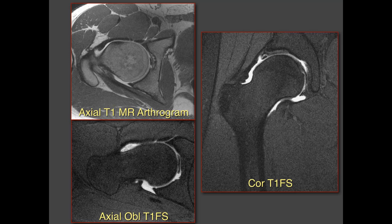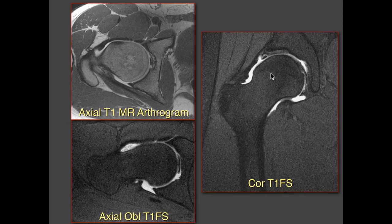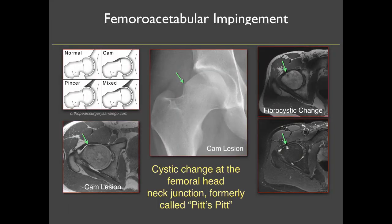We do a lot of MR imaging for FAI, especially MR arthrography — injecting gadolinium into the hip joint. Here's the CAM deformity on the T1 fat-saturated oblique image, and the coronal T1 fat-saturated image showing a tear of the acetabular labrum superiorly along with that CAM deformity. FAI is a very popular diagnosis these days. We've looked at cystic changes along the femoral head-neck junction for many years without knowing what they were, but they're probably related to FAI.